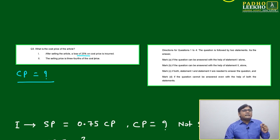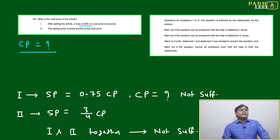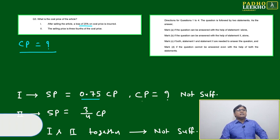Statement one: After selling the article, a loss of 25 percent on cost price is incurred. As per statement one, selling price is equal to 0.75 times cost price, because there's a 25 percent loss.